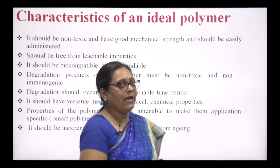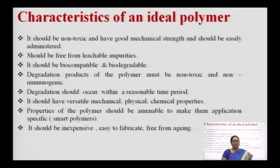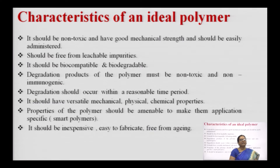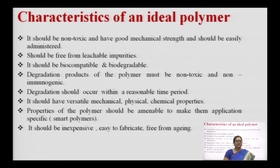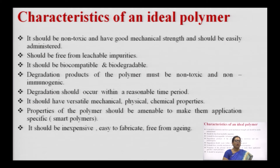Before we go on to that, I would like to highlight some characteristic properties of an ideal polymer. Firstly, a polymer selected for controlled drug delivery preparation should be non-toxic. It should have good mechanical strength and should be easily administered. It is very important that the polymer is not toxic to the adjacent tissues or biological organs, and it should not produce any side effects.